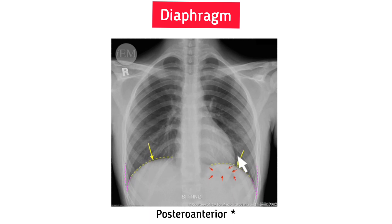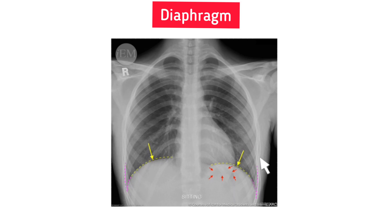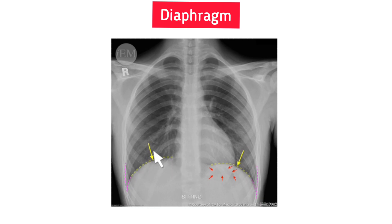Next, the diaphragm. Yellow dashed lines represent the diaphragm, red arrows the gastric air bubble, and pink dashed lines the costophrenic angles. The outline of the diaphragm should be clear and smooth; the right hemidiaphragm should be higher than the left. Three major characteristics: first, the gastric air bubble on the left; second, the diaphragmatic contour looks dome-shaped with the right side slightly higher; third, the costophrenic angles, which should be pointed, sharp, and clear.